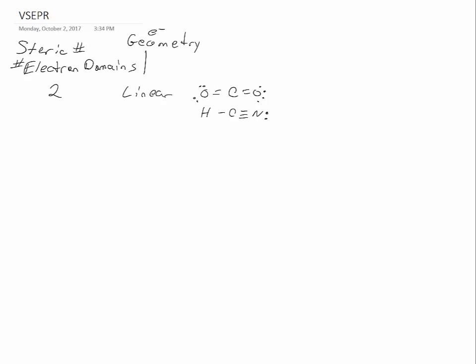If you have three electron domains, or three for the steric number, then this is always going to be trigonal planar. Examples include BF3, nitrate, and formaldehyde.